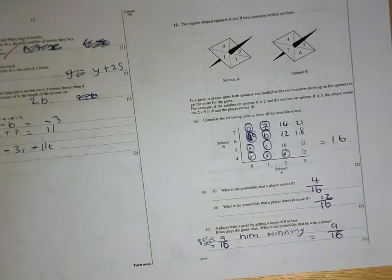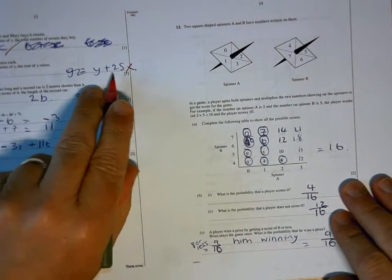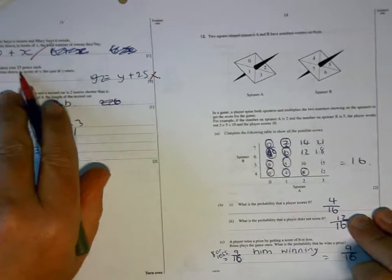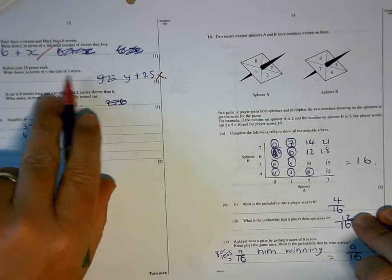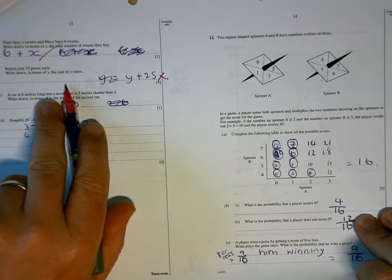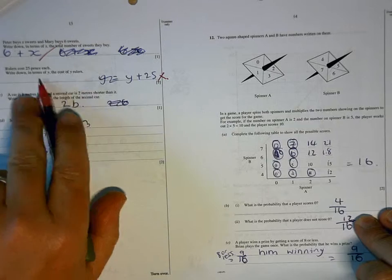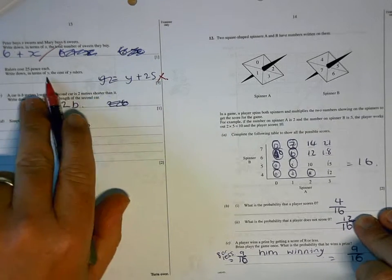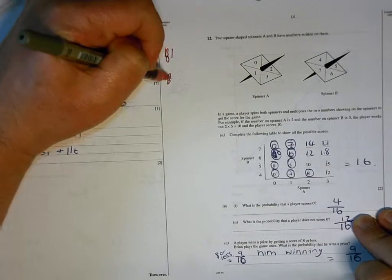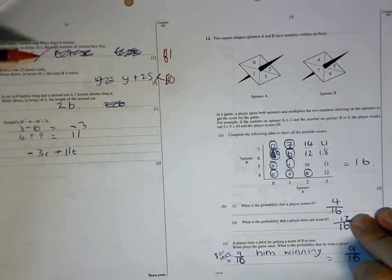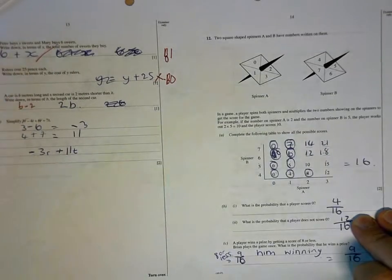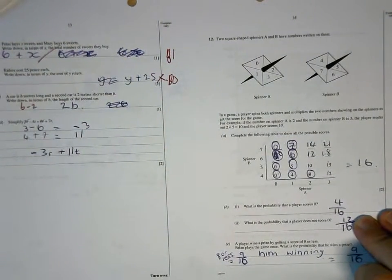6 plus x is right, it's not y plus 25, because for each of those rulers you are going to be multiplying by 25. So if you had 2 rulers, you would be 2 lots of 25, 3 rulers, 3 times 25, 10 rulers, 10 times 25, y rulers, y times 25. 2b, no, if it's 2 metres shorter, then it's going to be 2 metres less, which means you are taking away.